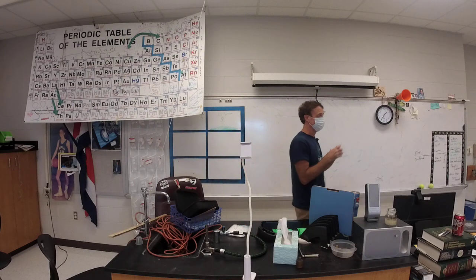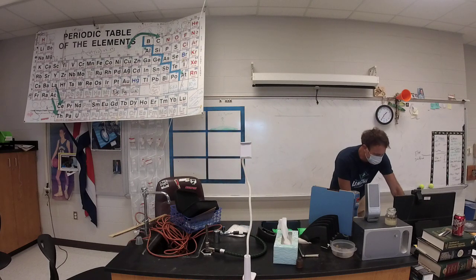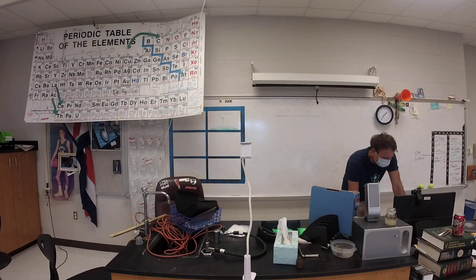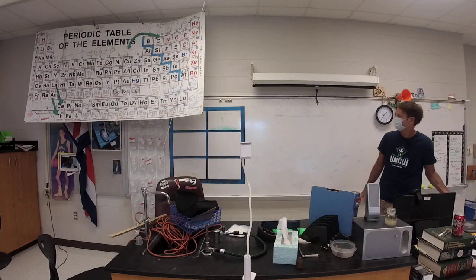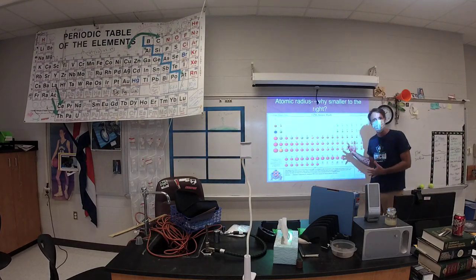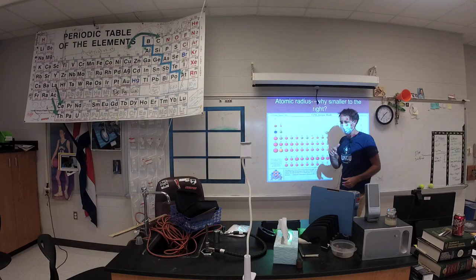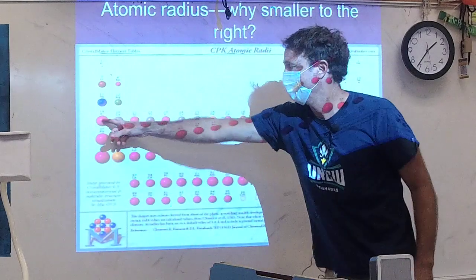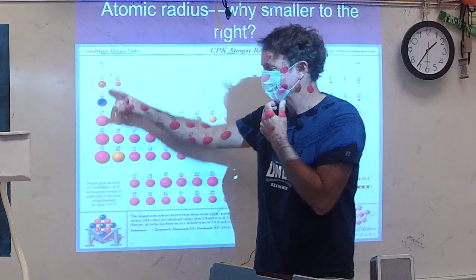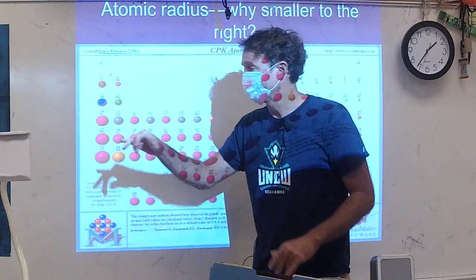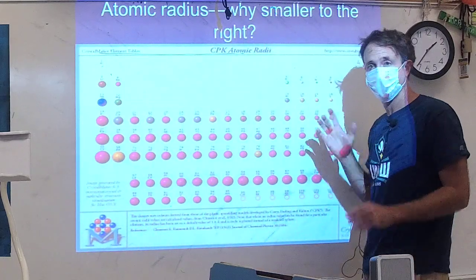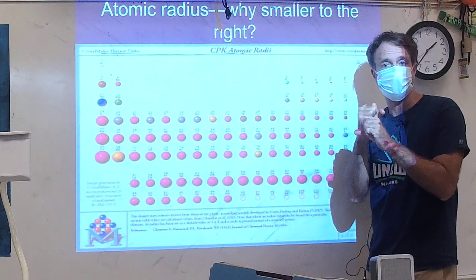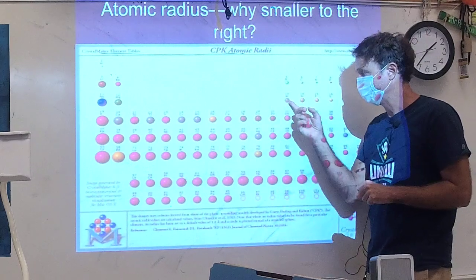We've been talking about the size of atoms, and we looked at the periodic table — probably made by Linus Pauling. Looking at this chart, we can see the size of atoms and the trends. As we go from left to right, atoms get smaller. As they go from top to bottom, they get bigger. The reason they get smaller going across is because you're adding protons, the nucleus is becoming stronger, so it has more of a pull on electrons.